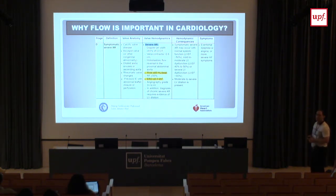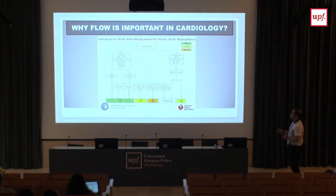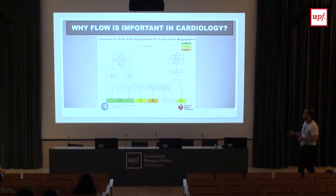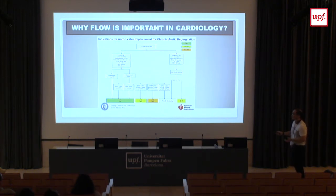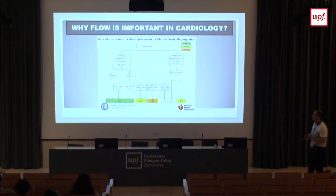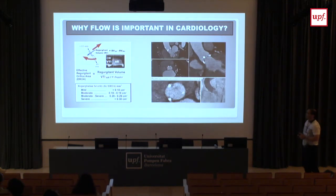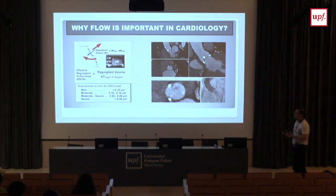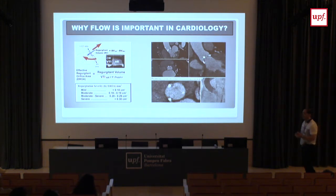We need volumetric information in our cardiology department every day. Once we have the volumes of the regurgitation or the severity of the stenosis, we use these algorithms in clinical practice. If we have a severe aortic regurgitation and the patient has symptoms, we consider the patient ready for aortic valve replacement. Based on information from echo and MR and the patient interview, we decide whether to operate or not. All the volumes we used were based on echocardiography, which has been the technique of choice for a long time and is still widely used.